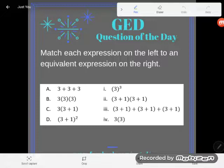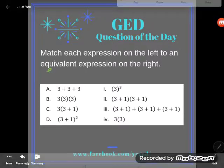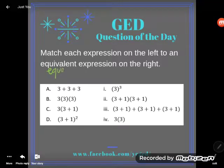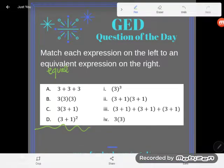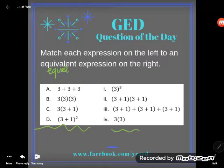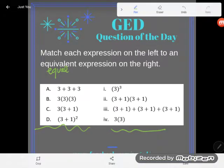The problem says match each expression on the left to an equivalent expression on the right. Equivalent just means equal. So basically there's one of these expressions on the left that's equivalent to one on the right. They all match up with one or the other. Let's take a look at the first expression.